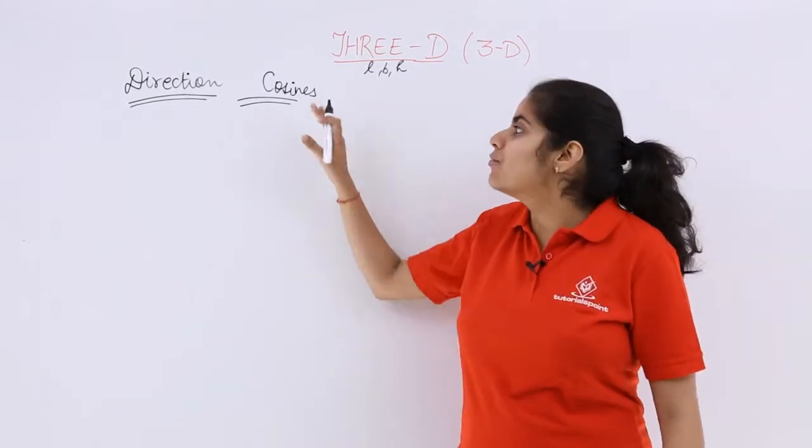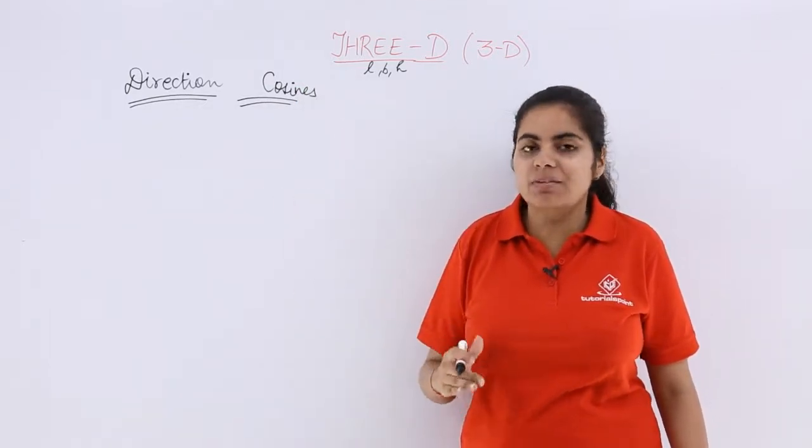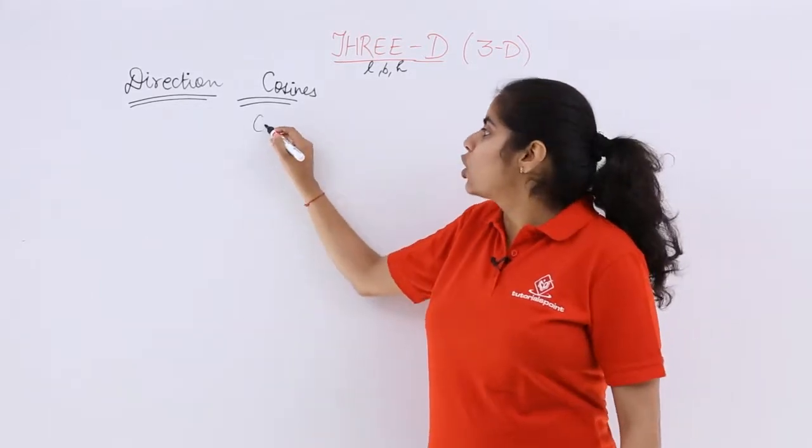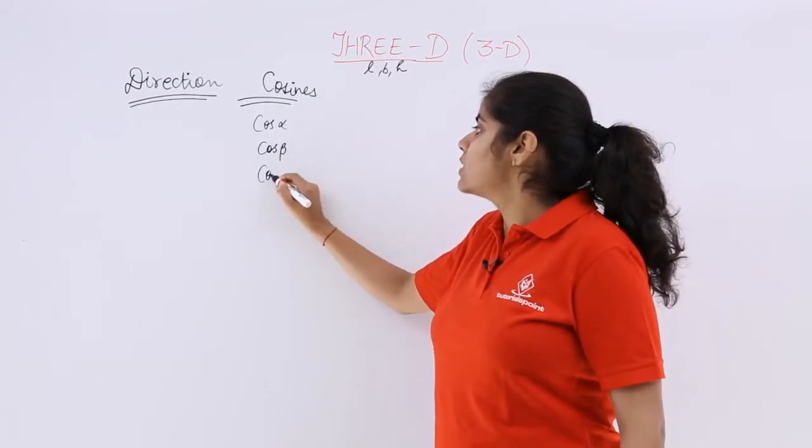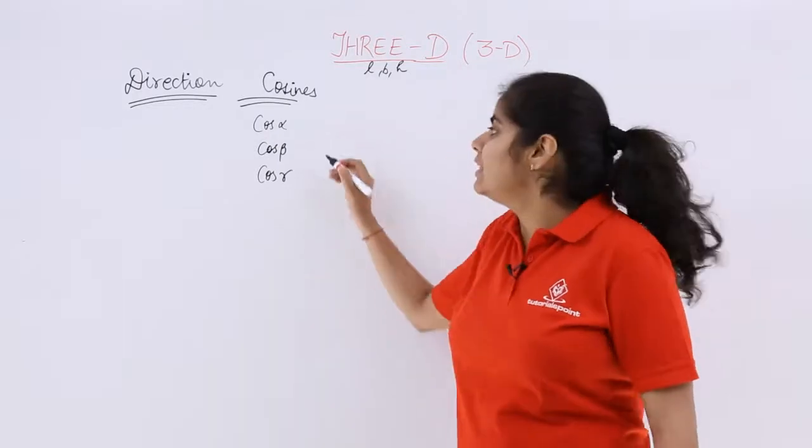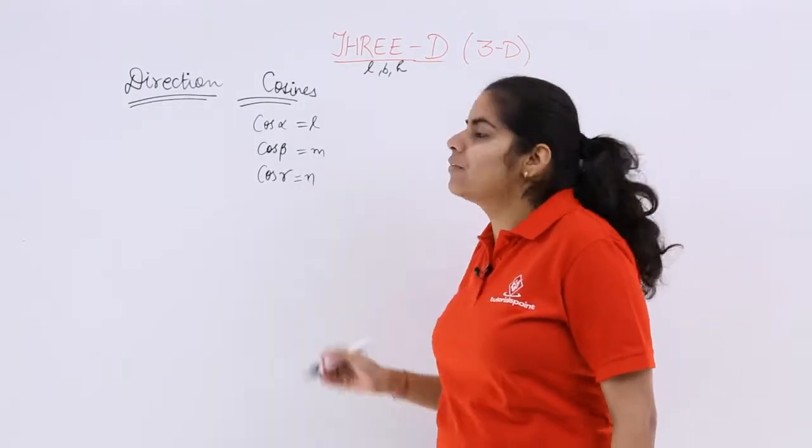So if you have a line which makes angle alpha, beta, gamma respectively with the positive directions of x axis, y axis, z axis, then cos alpha, cos beta, cos gamma can be called as the direction cosines and these are named other way as L, M, N respectively.